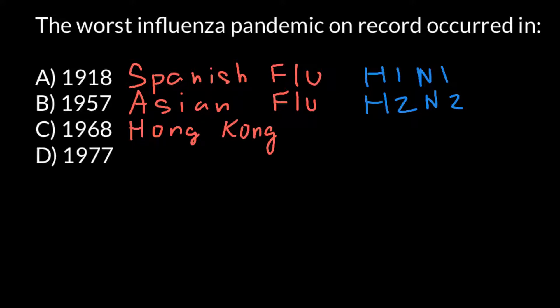The Hong Kong flu was caused by yet another different strain, which we know as H3N2. Each letter here stands for a different variant of the antigens — proteins that we can find on the surface of the influenza virus. And 1977 is when not a pandemic but rather an epidemic occurred.